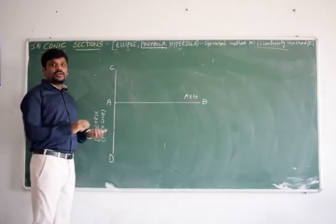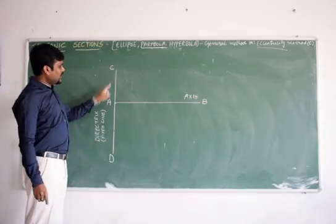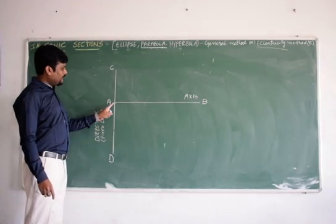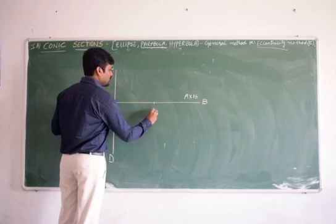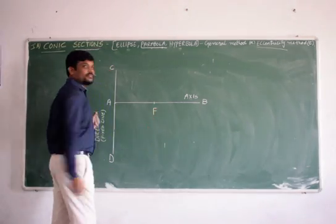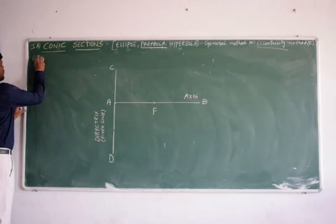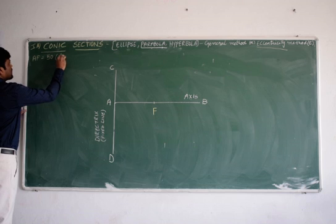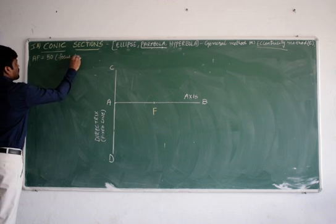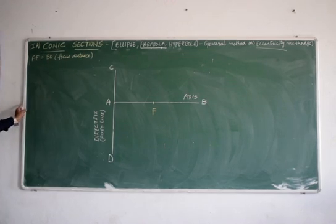Now locating focus onto the axis that means from the directrix or from the fixed line the distance for the focus is 50 which is given in the question. So this is nothing but F. AF equals to 50. That is focus distance from the directrix.